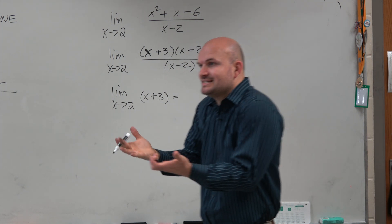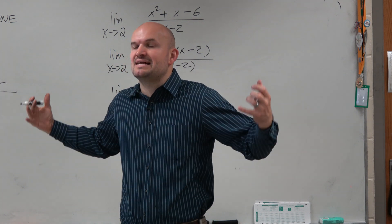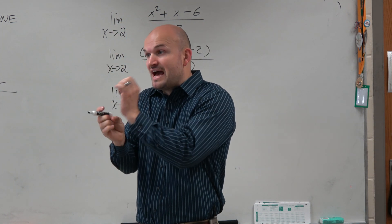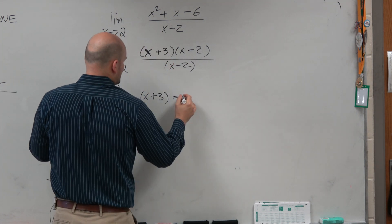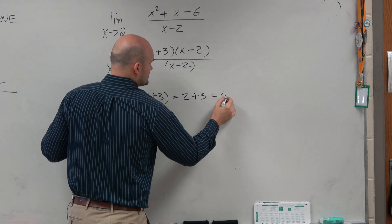But again, it doesn't matter what it's defined for. It depends on what it's approaching. So we've got to find the value at where that hole should occur. So we'll just do 2 plus 3, which is equal to 5.